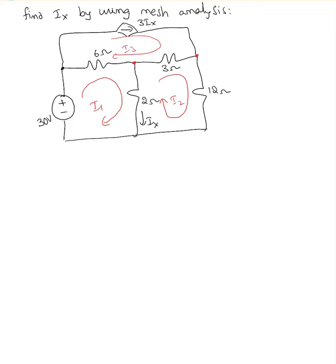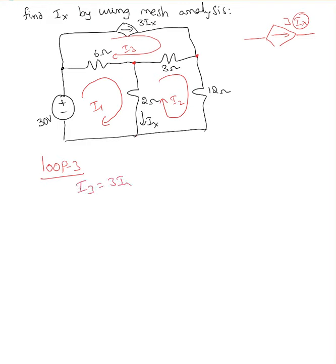For loop three, I don't need to apply KVL because there is a current source at the outer branch. That current source is a dependent current source. As long as you see a diamond shape, that's a dependent source, and since you see an arrow inside it, it's a current source. It depends on Ix, so it's a current-dependent current source. I can clearly take I3 equal to 3Ix.